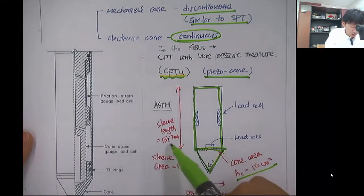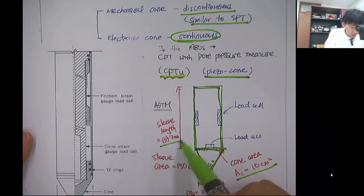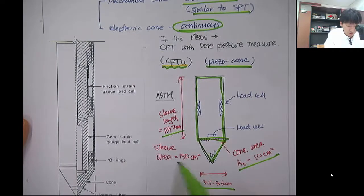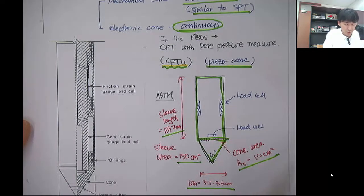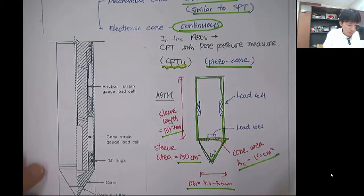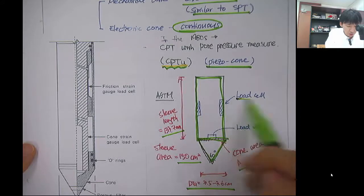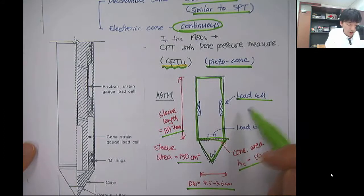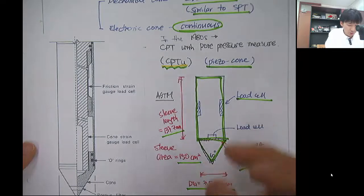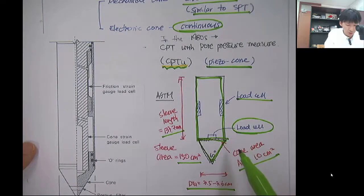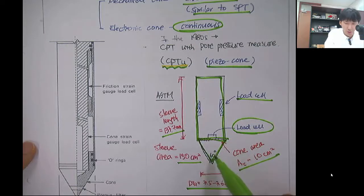The sleeve length, by the ASTM standard, is about 13 centimeters, and the sleeve area is 150 square centimeters. Here you have two load cells with strain gauges. This load cell is to obtain the friction force applied on the sleeve, and this load cell is to get the force applied on the cone tip.